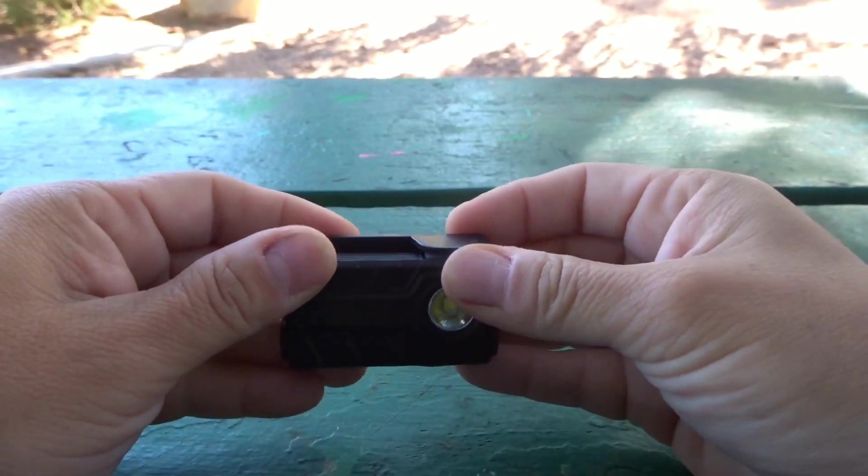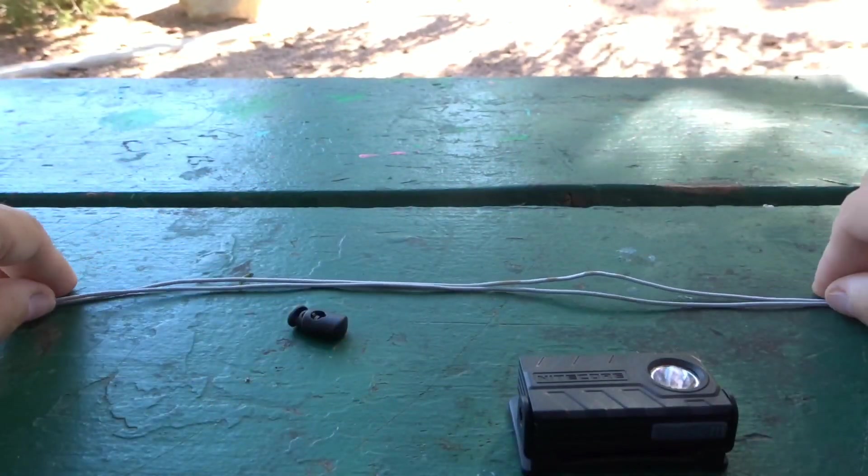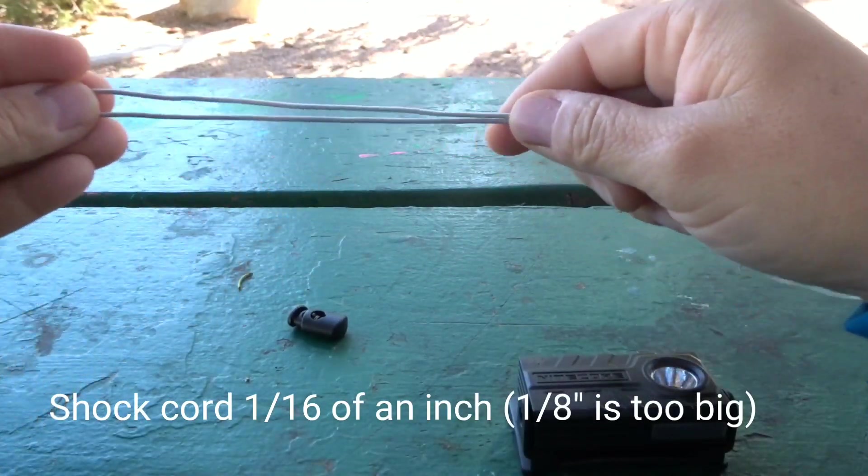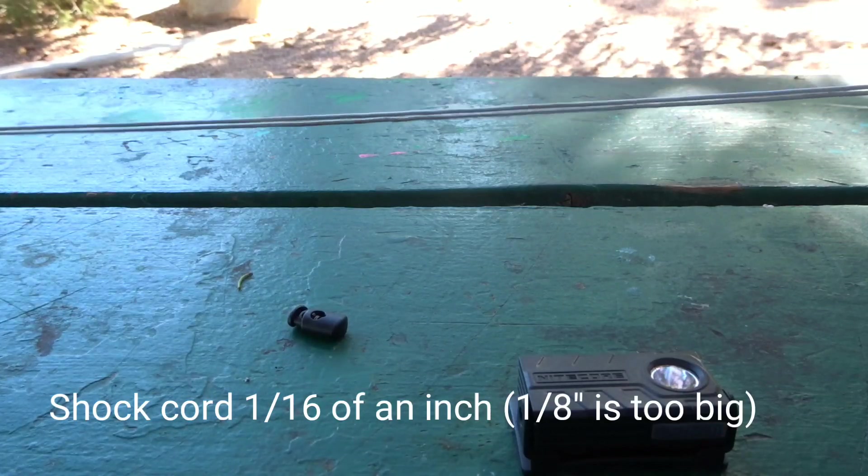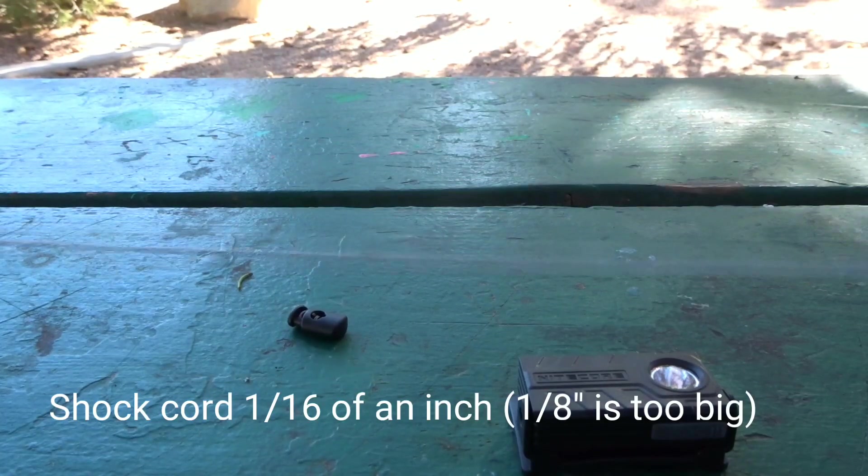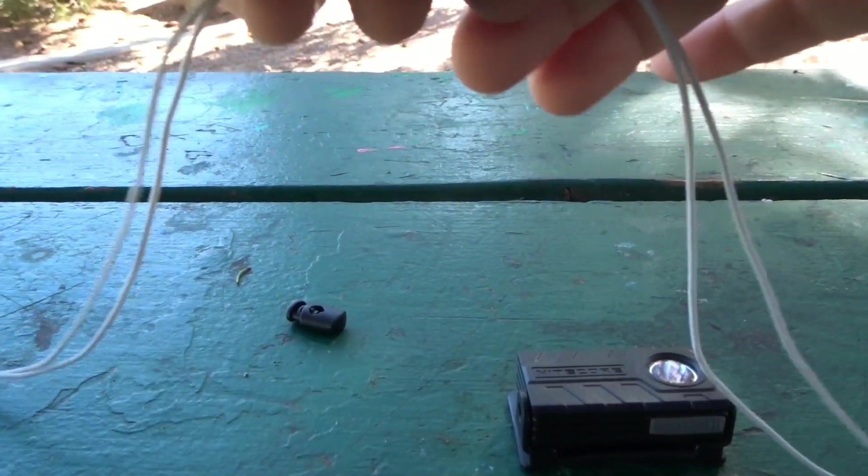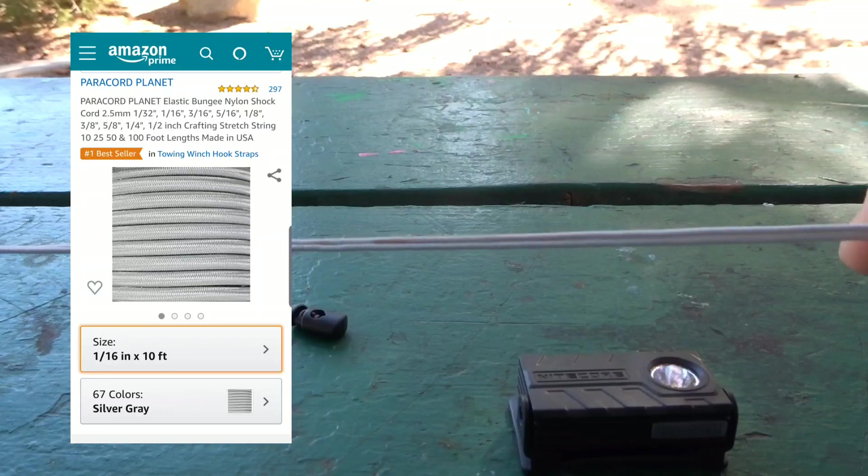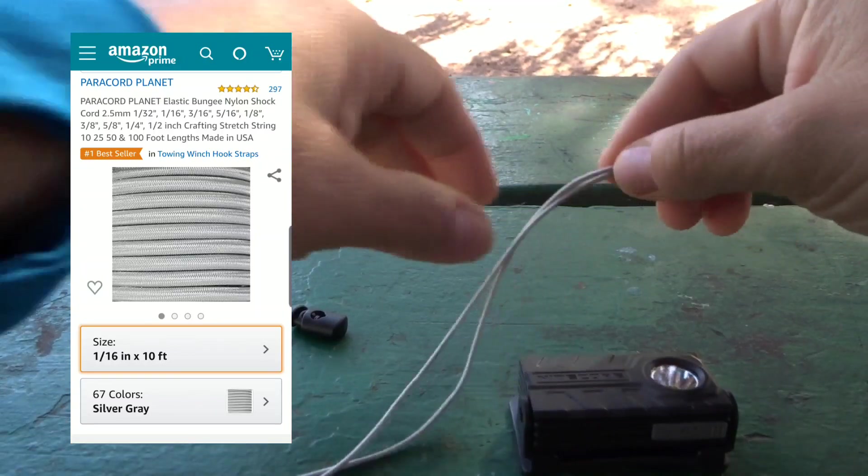And then you're going to need a 1/16 inch shock cord or bungee cord, however they call it. I will put the measurements in the description and in the video. You can find it on Amazon, that's the easiest place to find. So this is it, it's very thin actually.